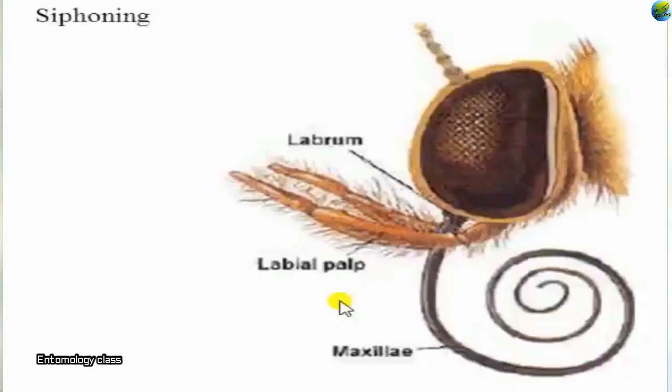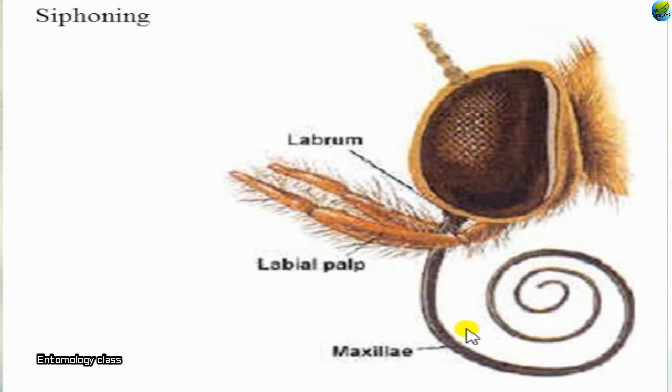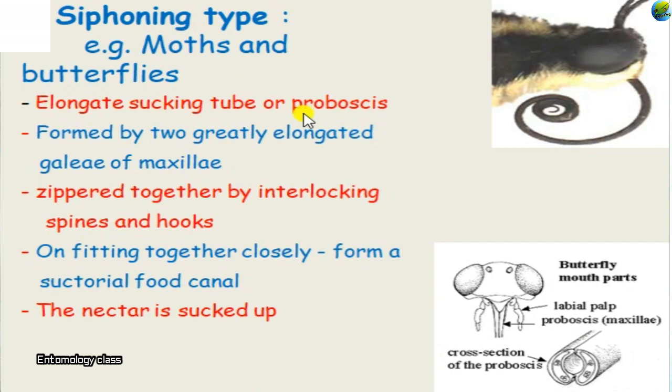In the siphoning mouthpart, the maxillary part is extended to form the proboscis. As they do not possess the stylet, the proboscis is formed especially from the maxillary segment — specifically from the galea. Recalling the parts of the maxilla: the basal part is the cardo, the lateral part is the stipes, and within the stipes the lobes include the lacinia on the outside and the galea on the inside. The two galea from the two maxillae are extended to form the proboscis — the siphoning mouthpart.